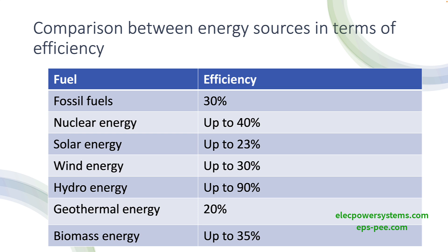Hydroelectric power plants have the highest efficiency among conventional energy sources, with modern plants achieving around 90 percent efficiency. It's worth noting that while efficiency is an important consideration, it is not the only factor to consider when choosing an energy source. Other factors such as cost, availability, environmental impact, and energy security also play a crucial role in determining the best energy source for a particular situation.